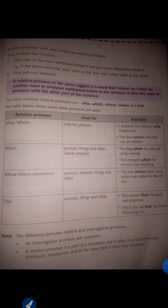In these sentences, 'who' and 'which' are relative pronouns. They refer to a noun mentioned before and give more information about it. 'Who' refers to 'the boy' and 'which' refers to 'the book.' Relative pronouns join two sentences. The definition: a relative pronoun, as the name suggests, is a word that relates and refers to another noun or pronoun mentioned before in the sentence. It links that noun or pronoun with the other part of the sentence. Common relative pronouns are: who, which, whom, whose, and that.